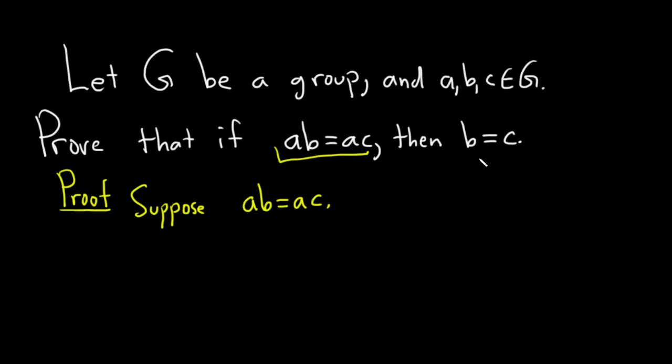And now we have to show that b is equal to c. So we know something. We would like to get rid of the a. We would basically want to cancel it. And so what we can do is use the fact that a is in G.